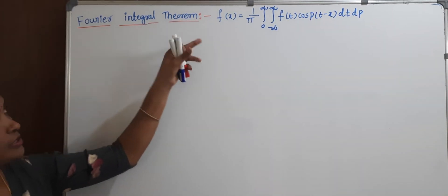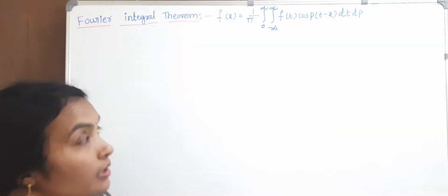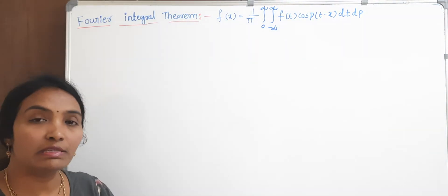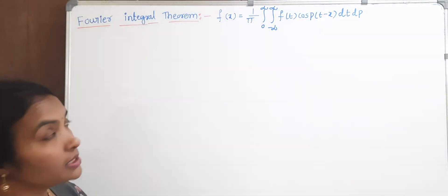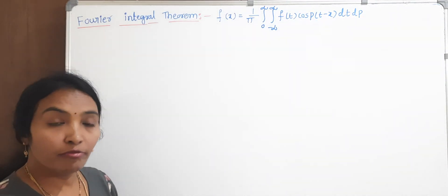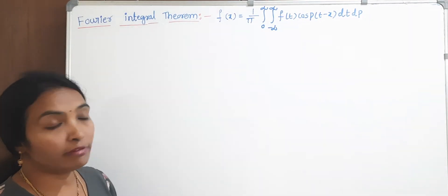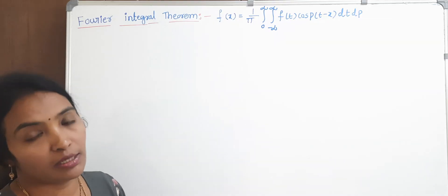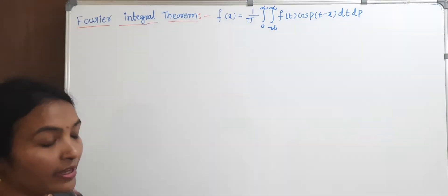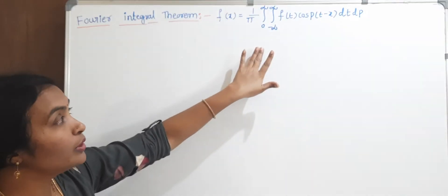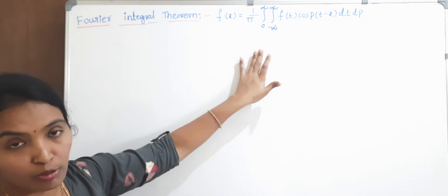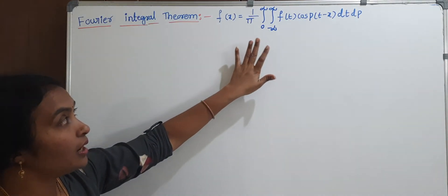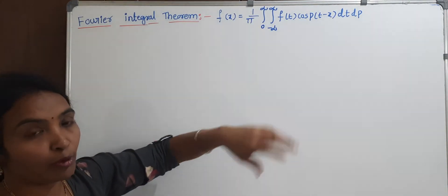This is the Fourier integral theorem. The statement states that f(x) is equal to 1 by pi times the integral from 0 to infinite and integral from minus infinite to infinite of f(t) cos[p(t minus x)] dt dp. By using this only, we are going to find the sine transform and cosine transform also, and these have applications in solving problems.